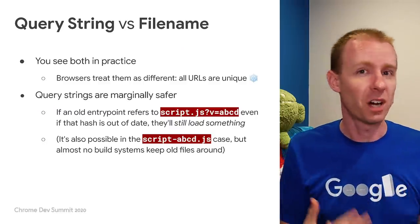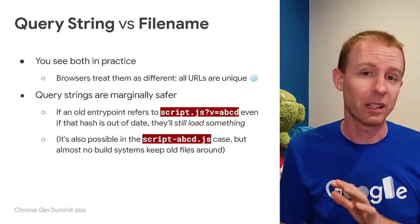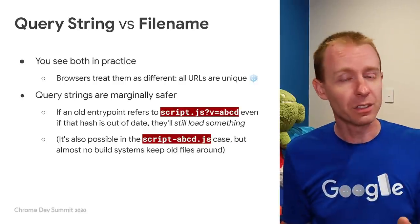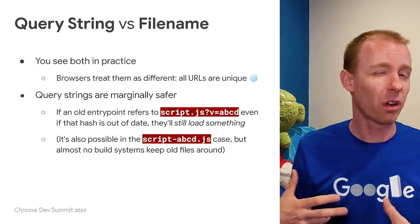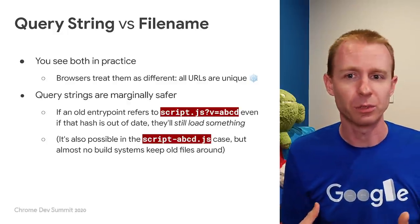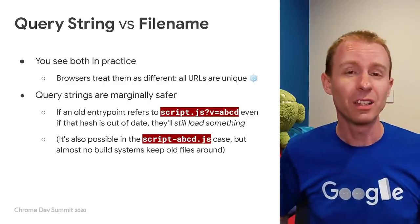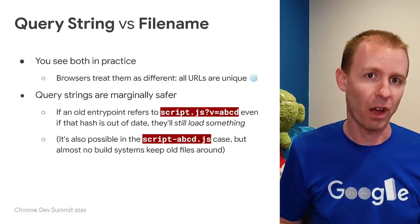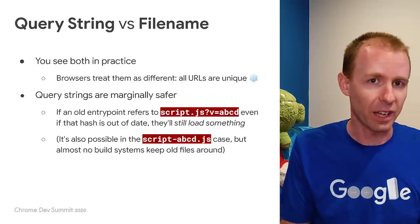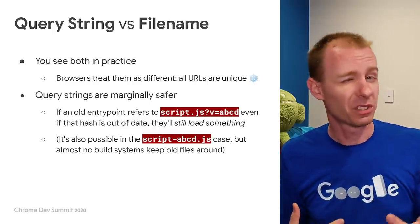I've mentioned query strings versus file names. In practice, it doesn't really matter which one you choose — your build system might lead you down one path versus another, and that's totally fine. In our experience, query strings tend to be marginally safer, especially for entry points like your JavaScript. If for some unknown reason your users have an old version of your HTML, they'll still get something if they load this file — the query string won't match, but it's just kind of a hint to the client, and they'll still return a file that is on disk. It's a bit of a safety net.